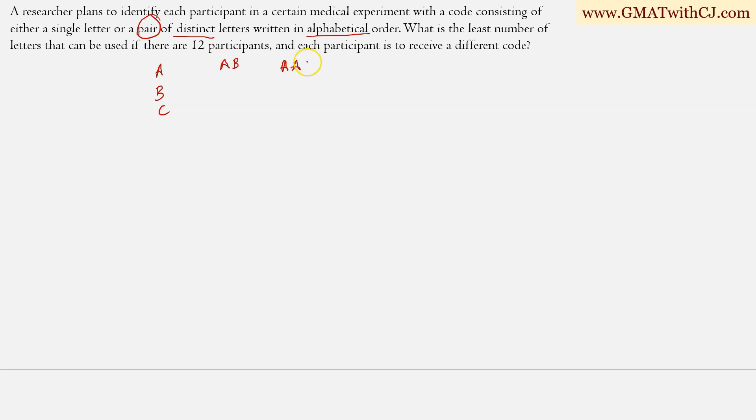So the code can be A, B. The code cannot be A, A or B, B because these are not distinct letters. And can the code be B, A? It cannot be because they are not written in the alphabetical order. So the codes can be A, B, B, C or I think A, C also because these are also in the alphabetical order.